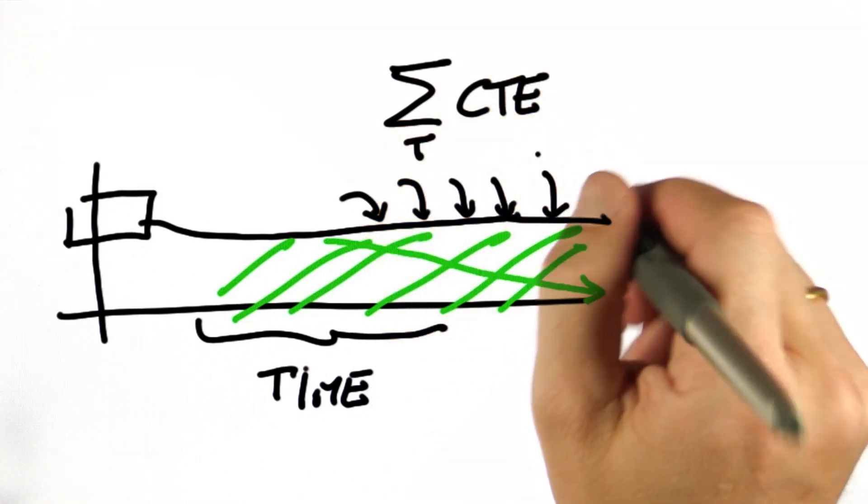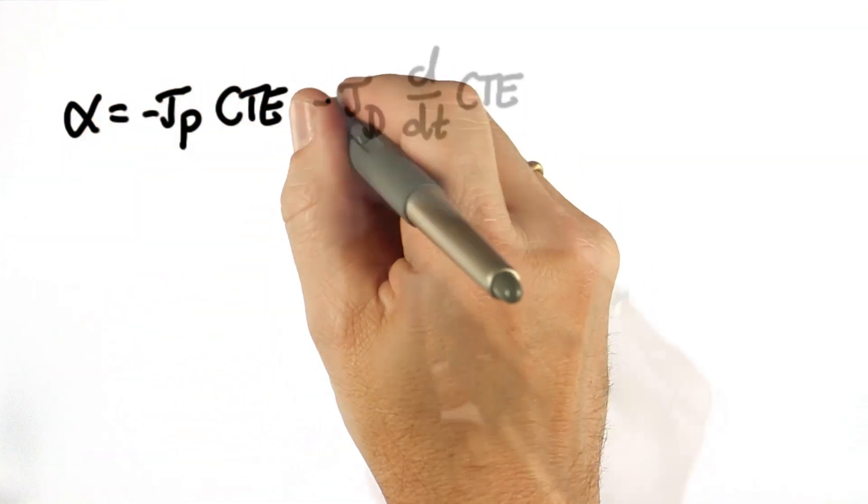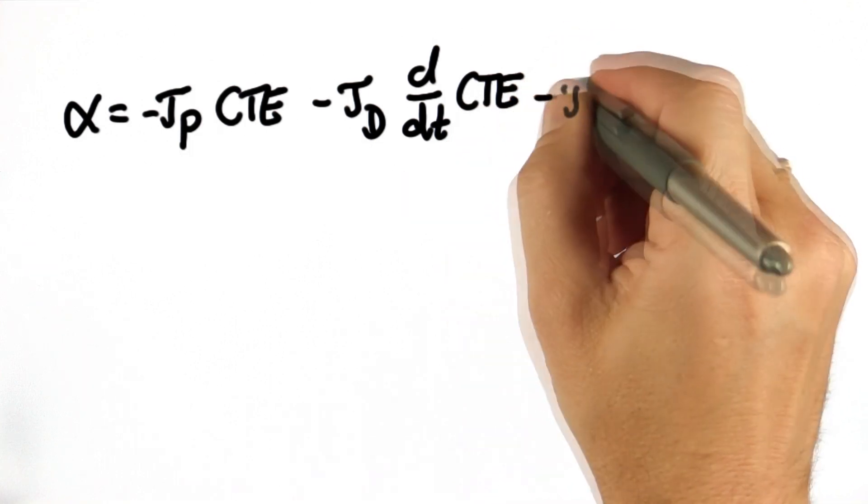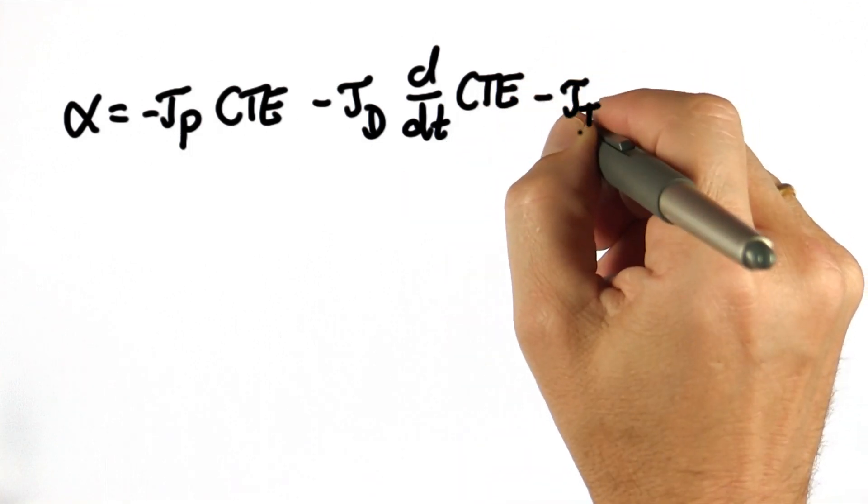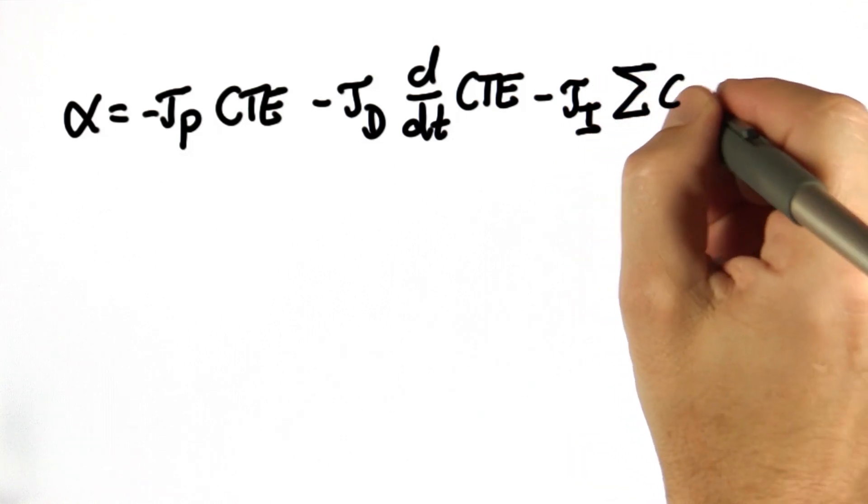Let's make a new control law where steering is proportional to the cross-track error. Before it was equally proportional to the differential of the cross-track error, but now it's also proportional to what's called the integral or the sum of all the cross-track errors you ever observed.